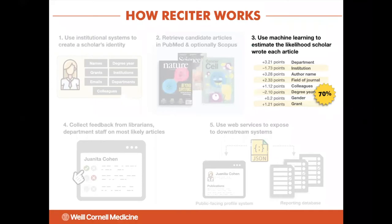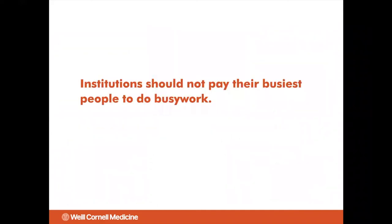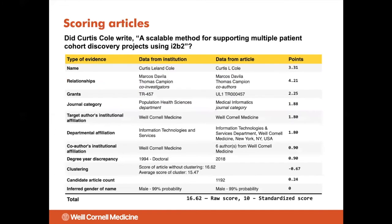Now we have this pool of candidate records. Let's use machine learning to figure out how likely it is that any one publication was written by our scholar of interest. We believe that institutions should not pay their best people to do busy work — our future Nobel laureate should not be reviewing their own publications; it should be someone else. If it's going to be someone else, we need to provide contextual clues and evidence as to why a particular article has been suggested, because no system is 100% perfect. Here's an example of a candidate record for the scholar Curtis Cole. We have data from our identity object, data from the article, and a score as to how closely those match with each other in the final column.